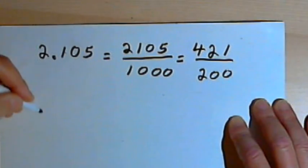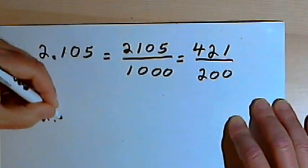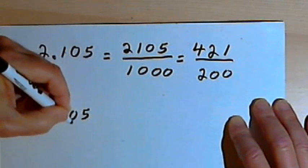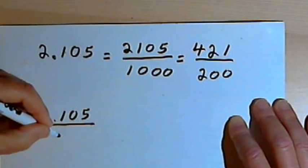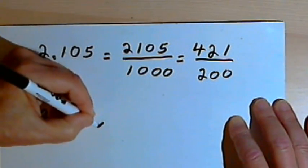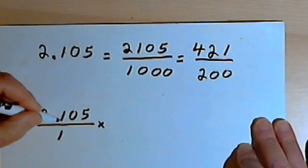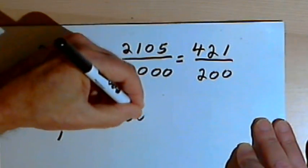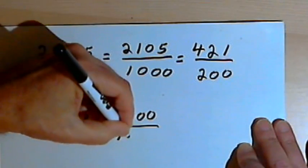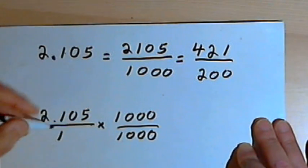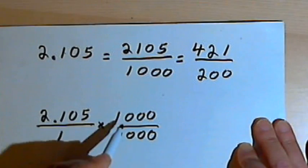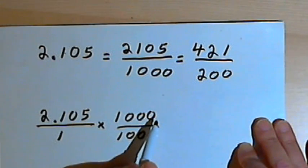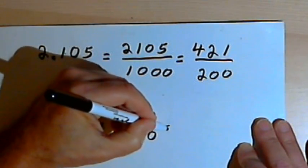If I want to use the other method, I'll take that 2.105, make that a fraction with 1 as the denominator, and then to get rid of those three decimal places, I'll multiply by 1,000 over 1,000. To get rid of three decimal places, I'm multiplying by 1 followed by three zeros. When I multiply that out,